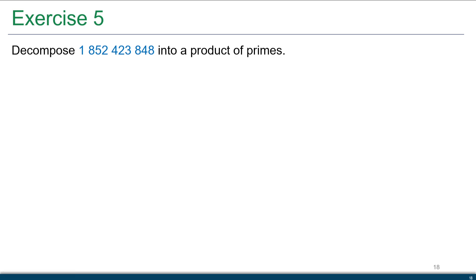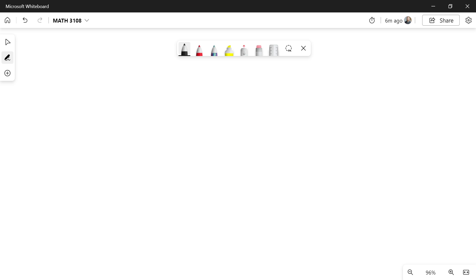So let's try an example here. We want to decompose. I have 1,852,423,848. And I'm going to say I'm going to be able to write this as a product of primes. So let's get to the worksheet here. So this is exercise 5. So to decompose this as a product of primes, again, this is 1,852,423,848.